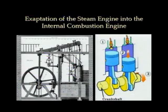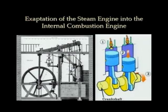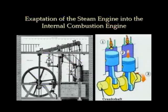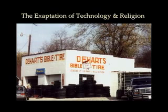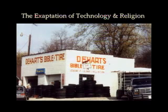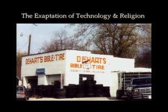The exaptation of the steam engine into the internal combustion engine — in other words, nature and markets just use whatever is laying around that's available. There's an excellent book on this: George Basala's book on the evolution of technology. He presents an entire model of natural selection operating in marketplaces and in the history of technology, showing how technology usually develops through tens of thousands of little trial-and-error steps, with selection for the most successful as defined by what people actually want to use. And I found this to be a fun example of exaptation of technology and religion — DeHart's Bible Entire. The little sign below it says, 'Jesus said, if I go away, I will return.' I guess that's on a four-wheel drive.